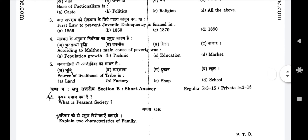Fifth question, Section A: Source of livelihood of tribe (Jan jatiyo ki aajvika ka saadhan hai) — Option A: Land, Option B: Factory, Option C: Shop, Option D: School.